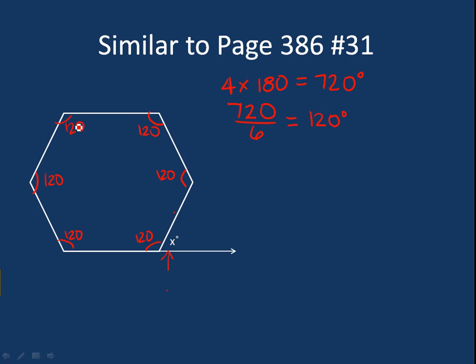But we're not interested really in the inside angles, we want to know this one, right? So if you notice, this is a line right here, and these two angles make that line. That makes them a linear pair.